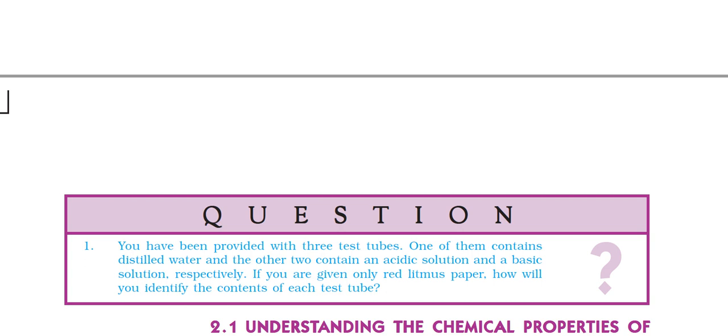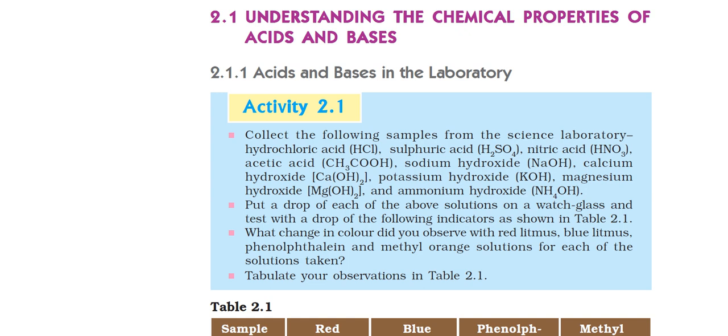Now we will see how we can understand the chemical properties of acids and bases. If we talk about acids and bases in the laboratory, we will see Activity 2.1. We will collect some following samples: hydrochloric acid, sulfuric acid, nitric acid, acetic acid. These bases are sodium hydroxide, calcium hydroxide, potassium hydroxide, magnesium hydroxide, and ammonium hydroxide.